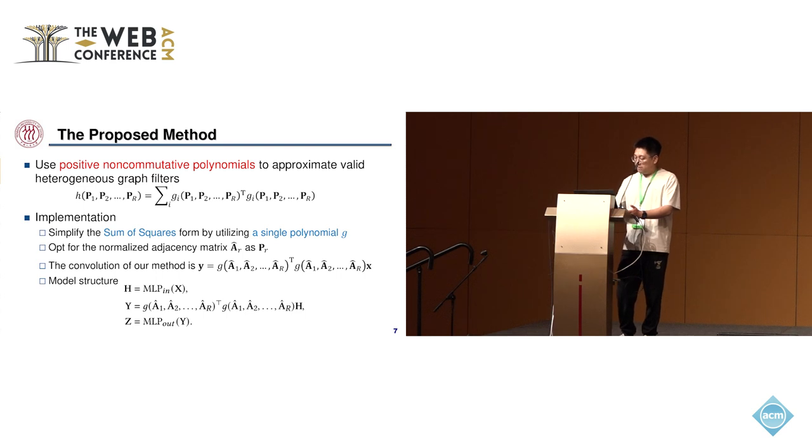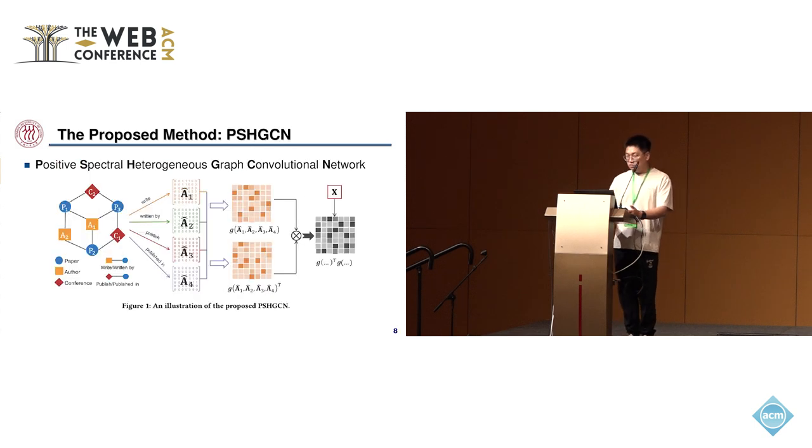Remarkably, despite only learning a single polynomial function, the experimental results demonstrate that this approach shows excellent performance. Additionally, we opted for the normalized adjacency matrix as the shift operator. Finally, we obtained the detailed convolution and model structure for our method. This figure shows the graph convolution of our proposed positive spectral heterogeneous graph convolution network, which is abbreviated as PSHGN.